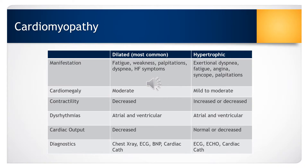With hypertrophic cardiomyopathy, the patient will have exertional dyspnea, fatigue, angina, syncope, and palpitations. They will have mild to moderate cardiomegaly. They may have increased or decreased contractility. They will also have atrial or ventricular dysrhythmias, and their cardiac output may be normal or decreased.